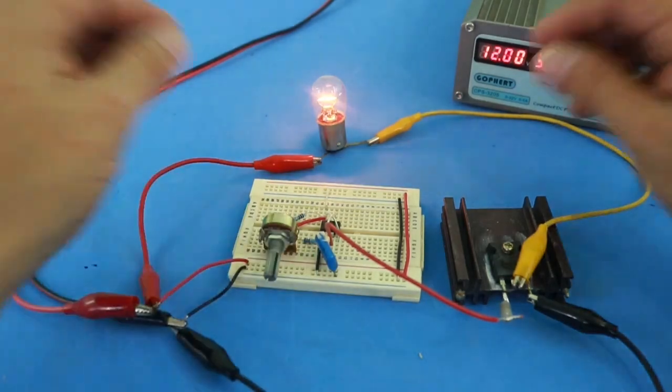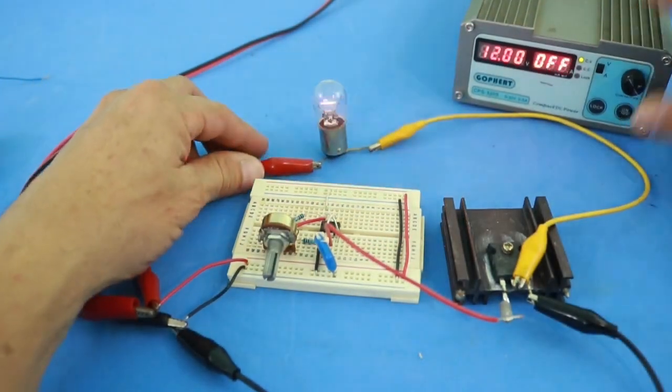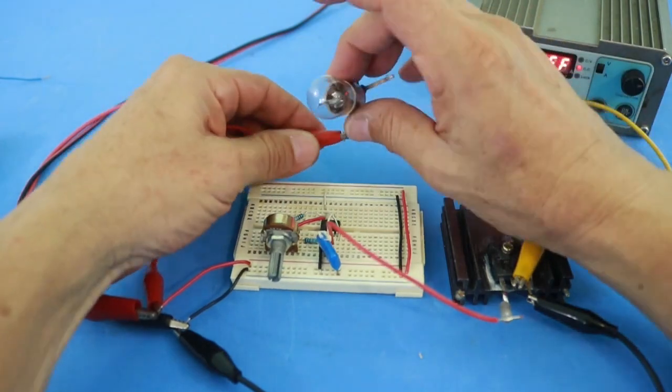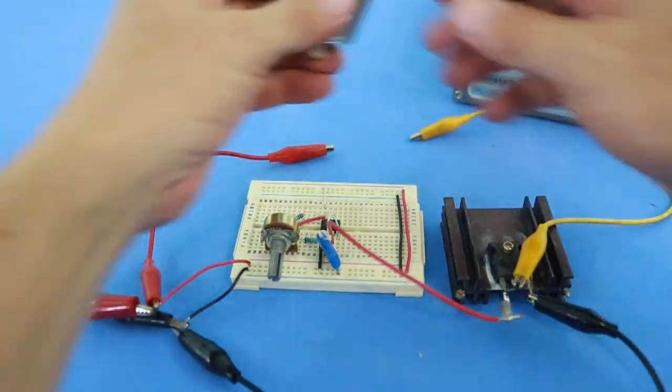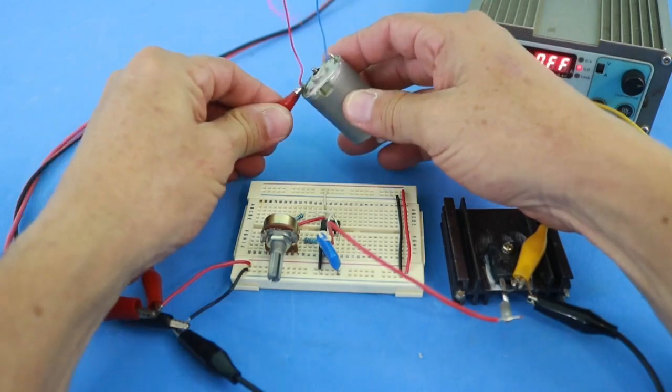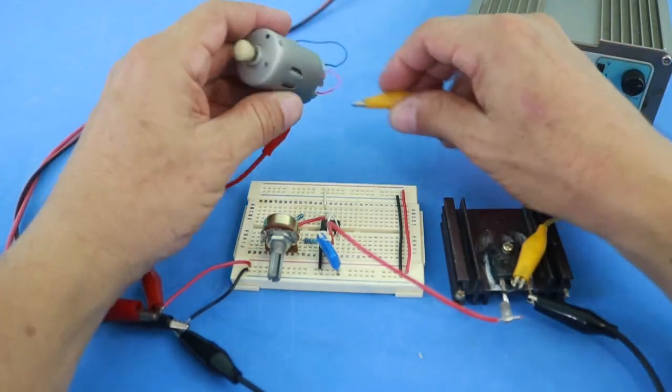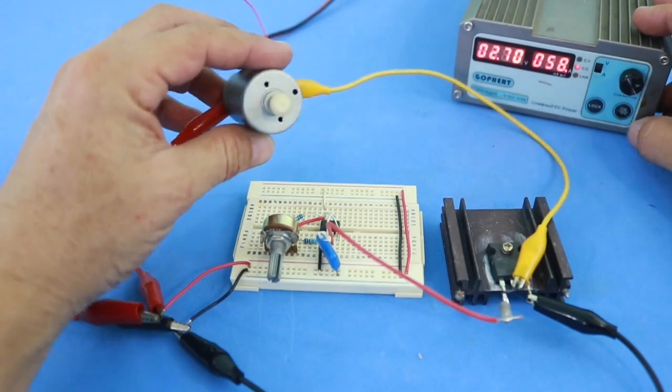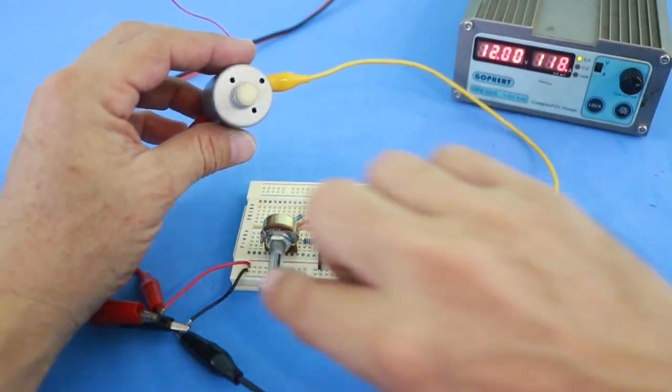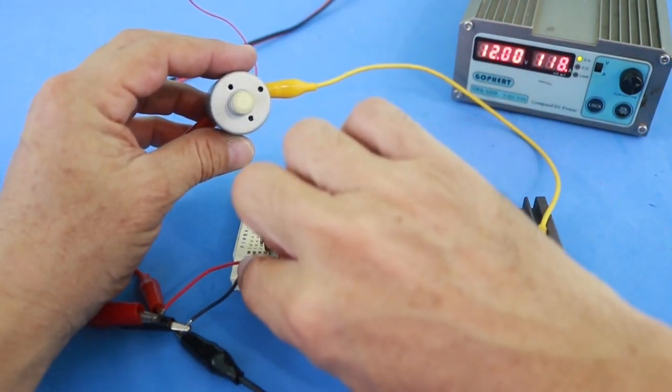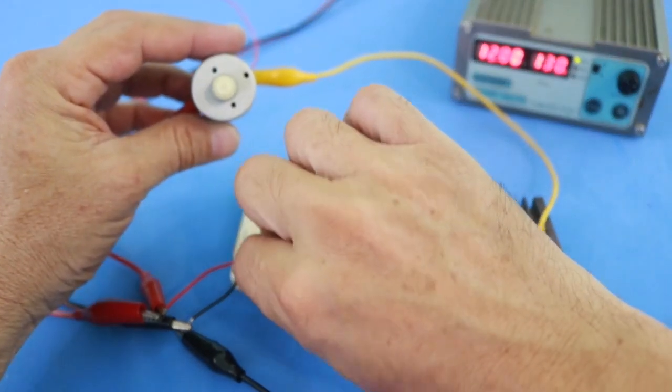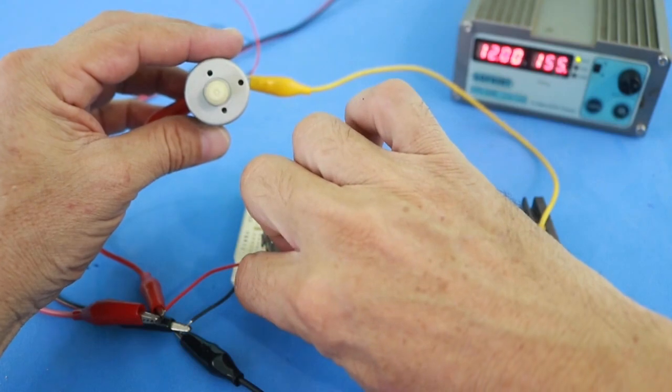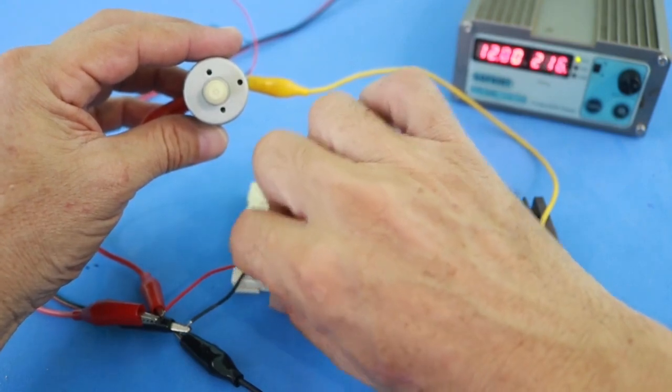And as we said before, we can also use the circuit to vary the speed of a DC motor. Let's see... the motor is running. I'm going to move the potentiometer. Can you hear the change in the pitch of the motor?